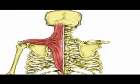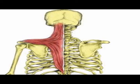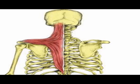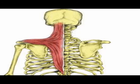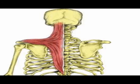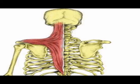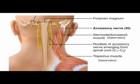The concentric action of the middle part of the trapezius muscle is scapular retraction. The concentric actions of the lower part of the trapezius muscle are upward rotation of the scapula, depression of the scapula, and retraction of the scapula.